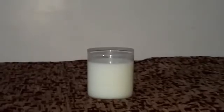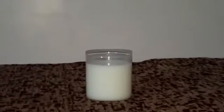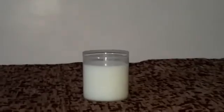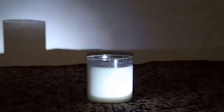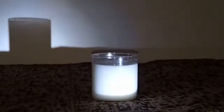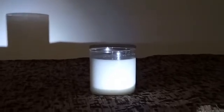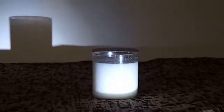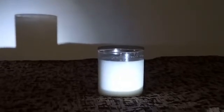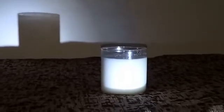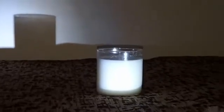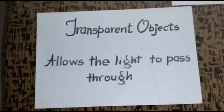Add more milk to the liquid so that the liquid turns completely white. Now, flash the light onto the liquid. You will see the shadow of the glass on the white screen because no light is passed through the liquid. So, the objects that do not allow the light to pass through them are called opaque objects.